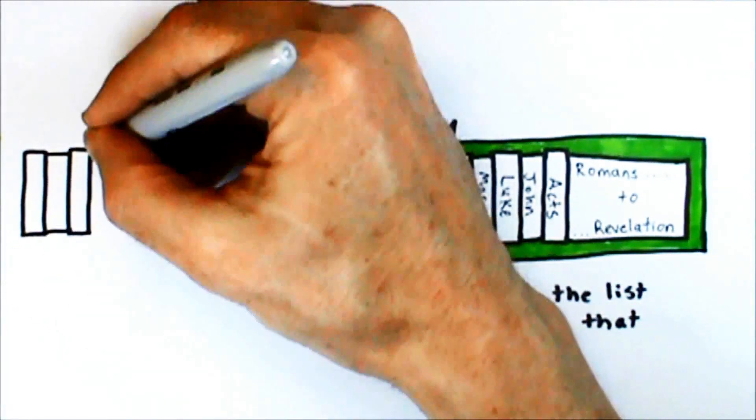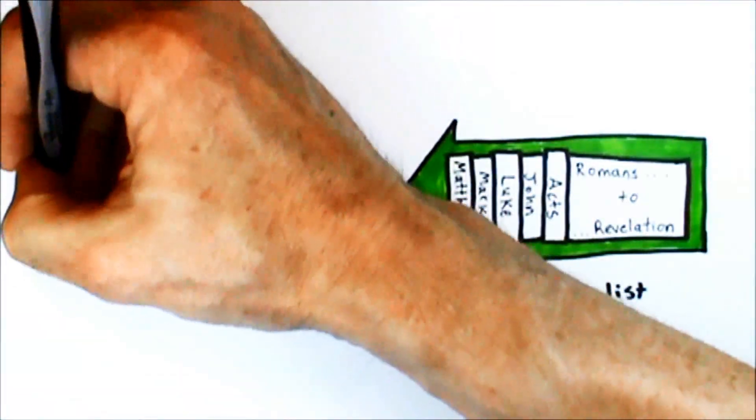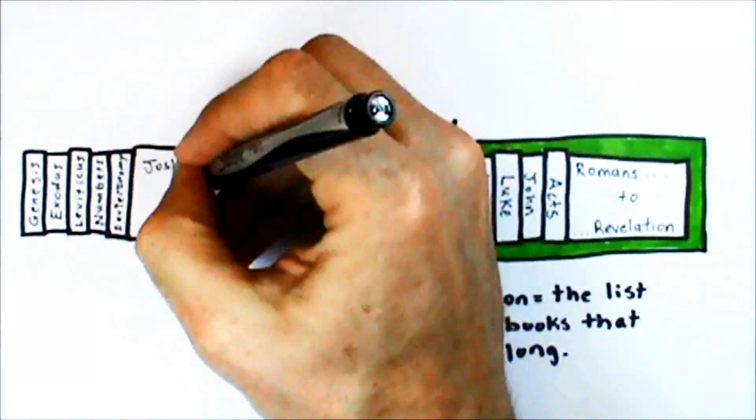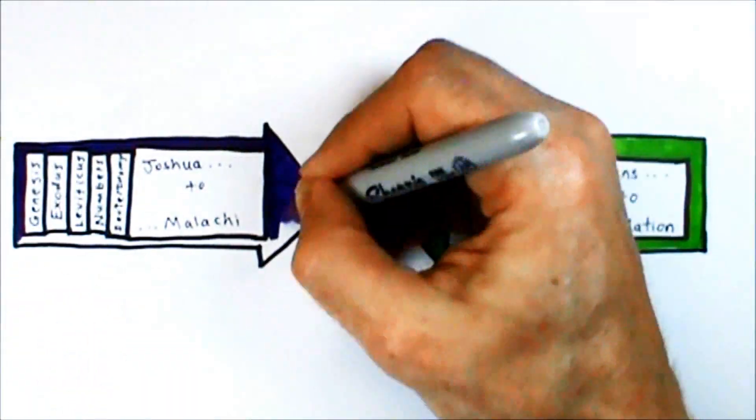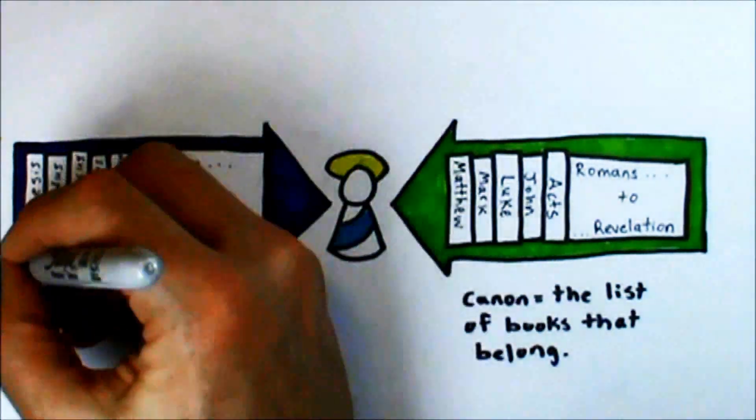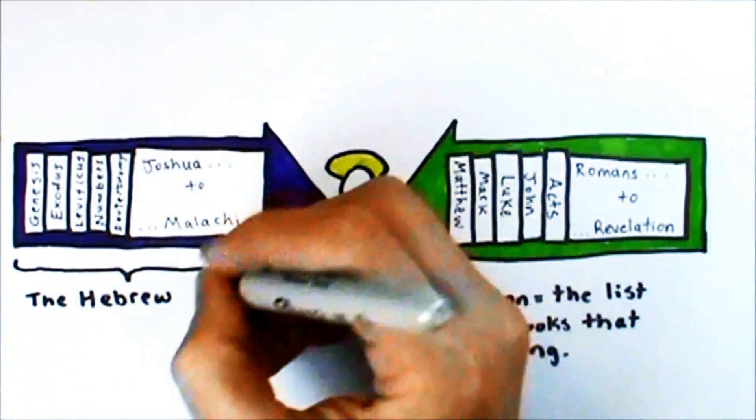Jesus himself was a Jew, and the Jews in his day had their own set of sacred writings that described the history of God's life with Israel. Christians sometimes call these Hebrew scriptures the Old Testament, and essentially this was the Bible as it existed in Jesus's day.